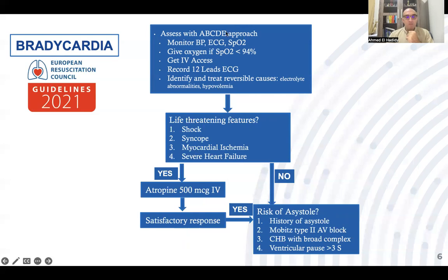To summarize the algorithm: perform the ABCD approach, monitor blood pressure, insert an IV line, treat correctable causes, and search for life-threatening features — shock, syncope, myocardial ischemia or infarction, or severe heart failure. If any are present, give atropine 0.5 mg IV bolus and check for a satisfactory response. If there are no life-threatening features, check for risk of asystole.